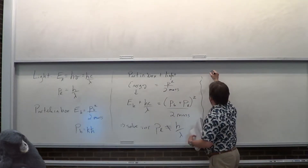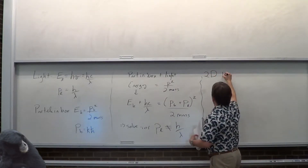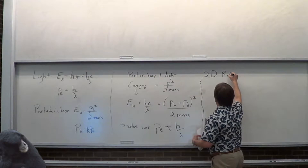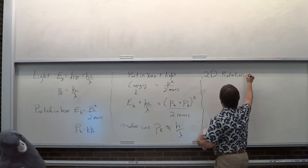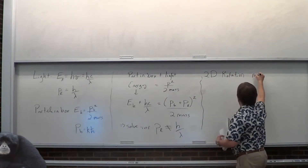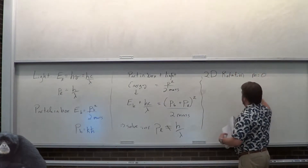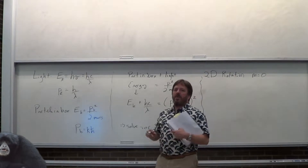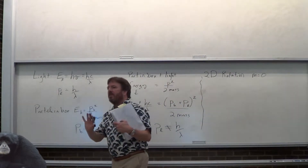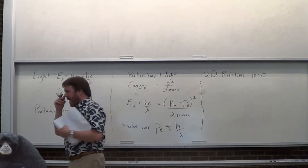Let's go back to 2D rotation and do the M equals zero case. M equals zero means that the particle is not rotating.